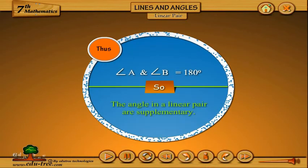Thus Angle A and Angle B equals 180 degrees. So, the angles in a linear pair are supplementary.